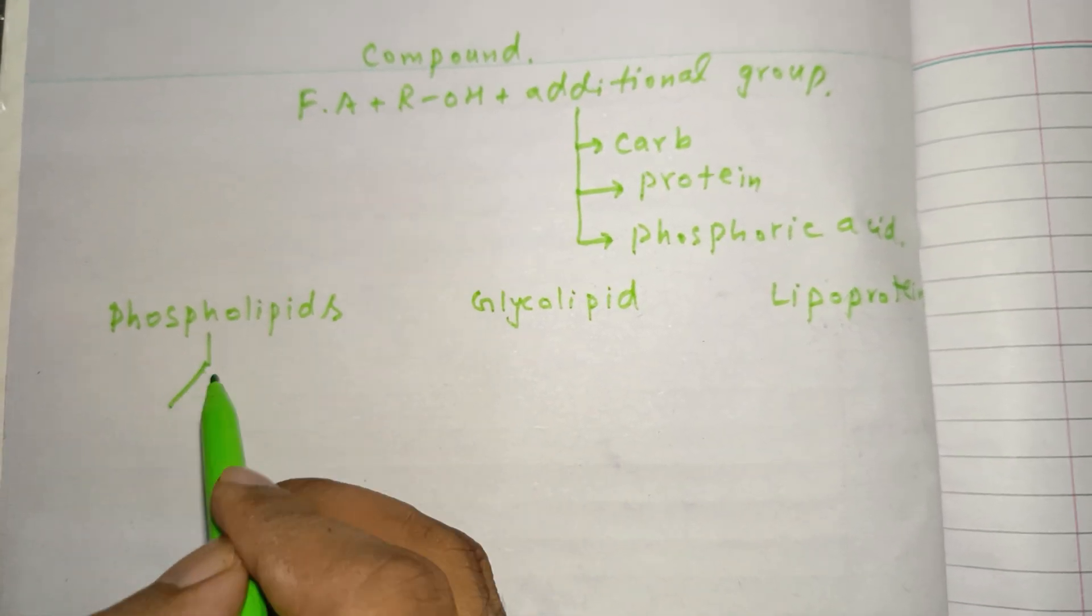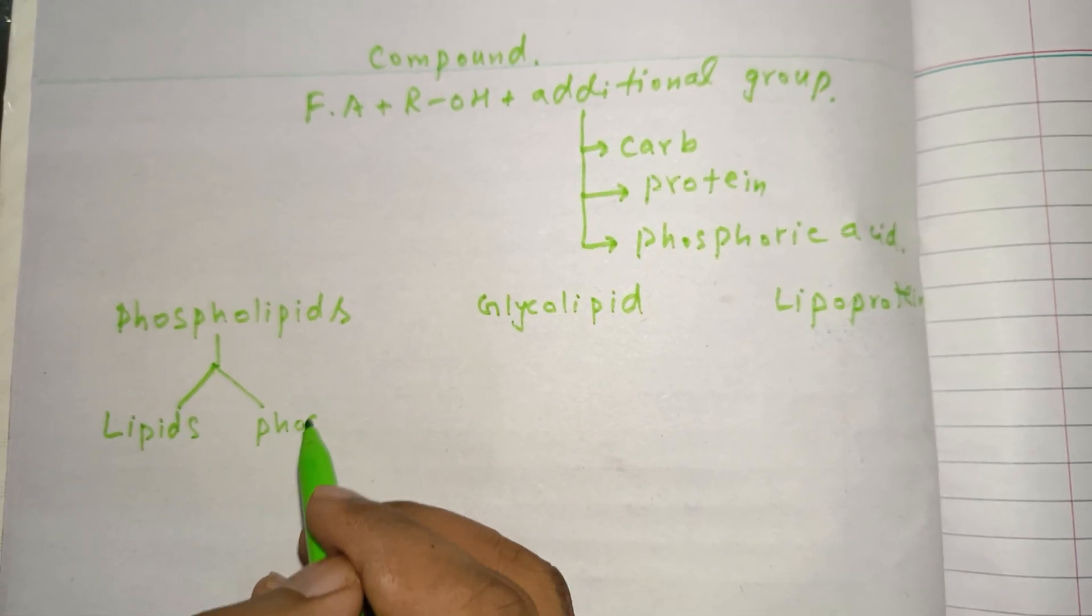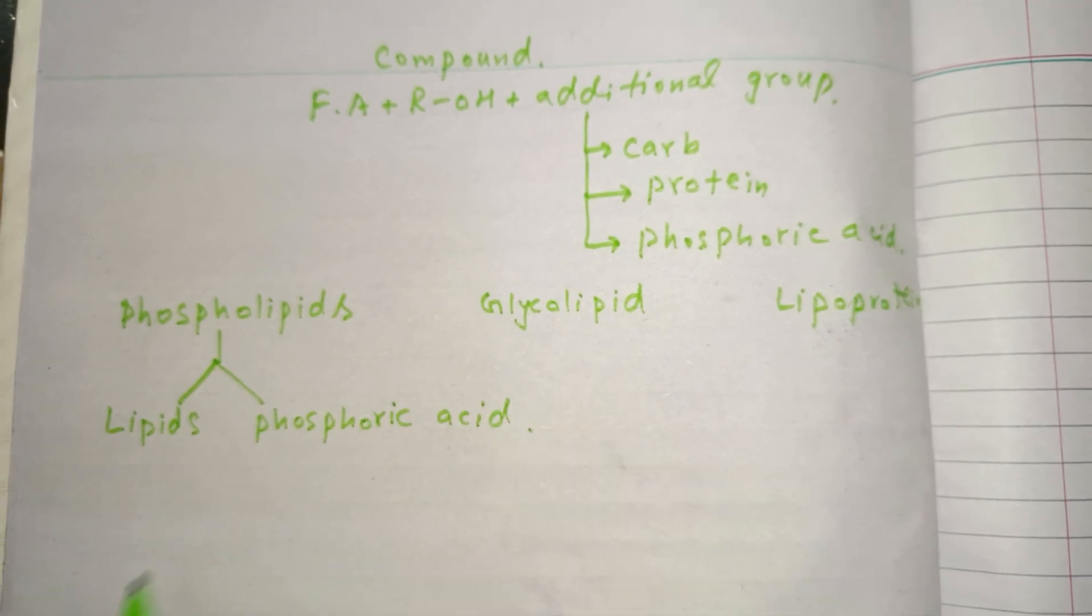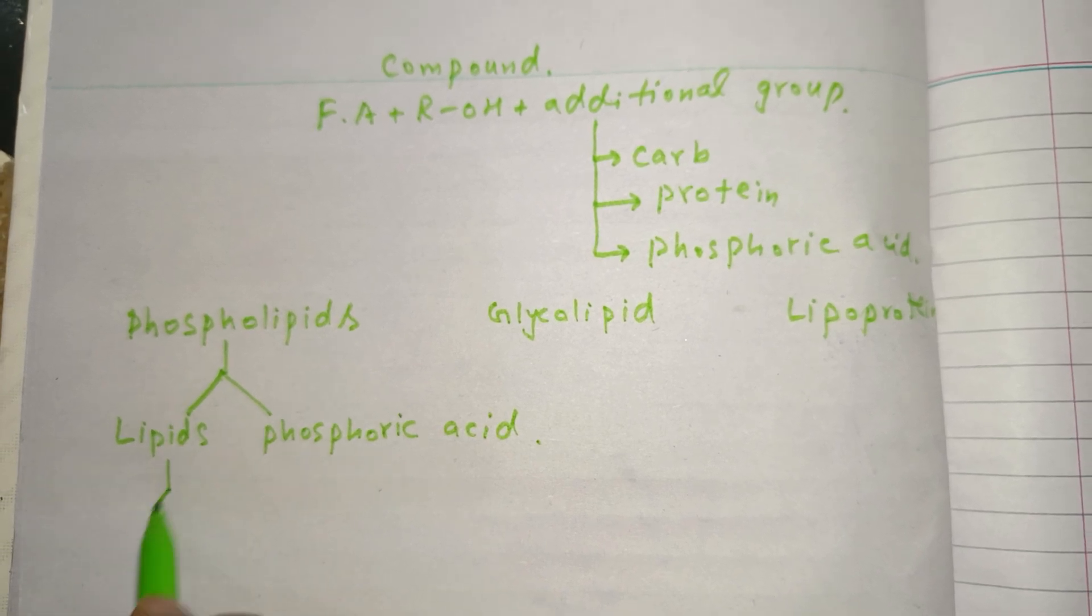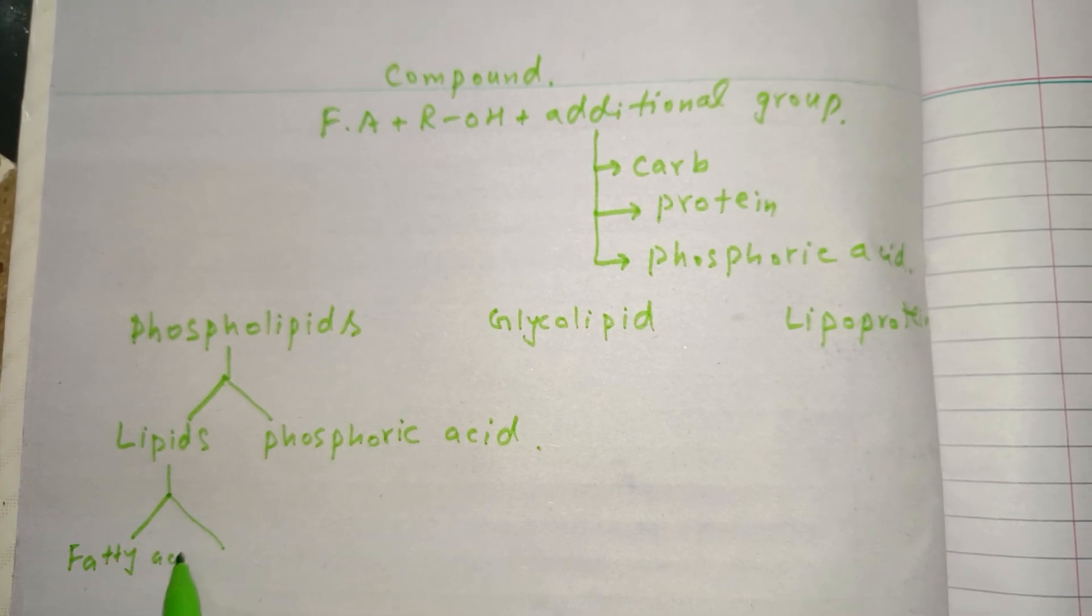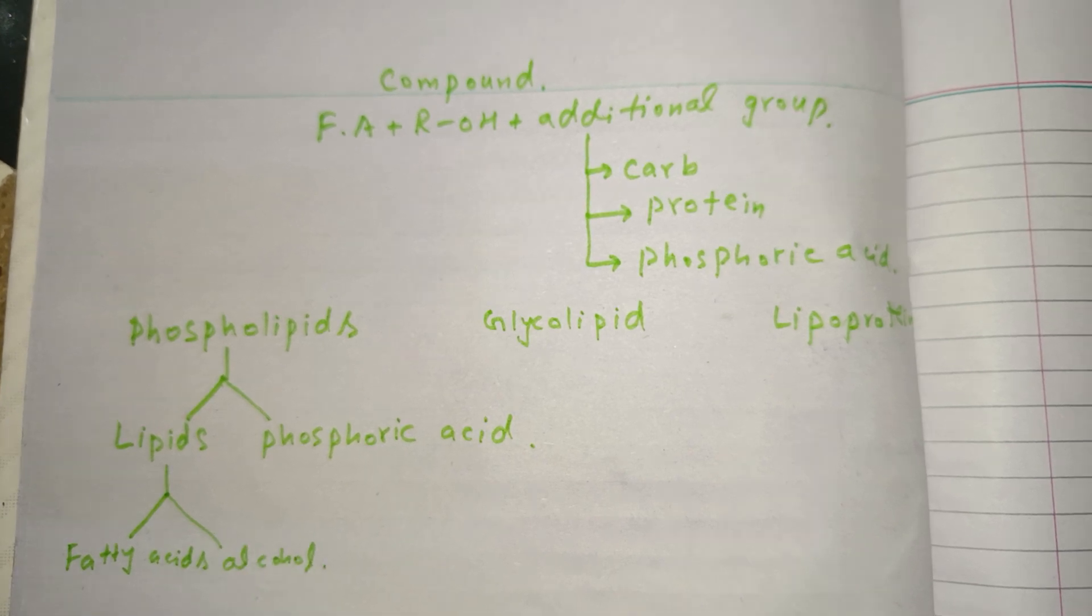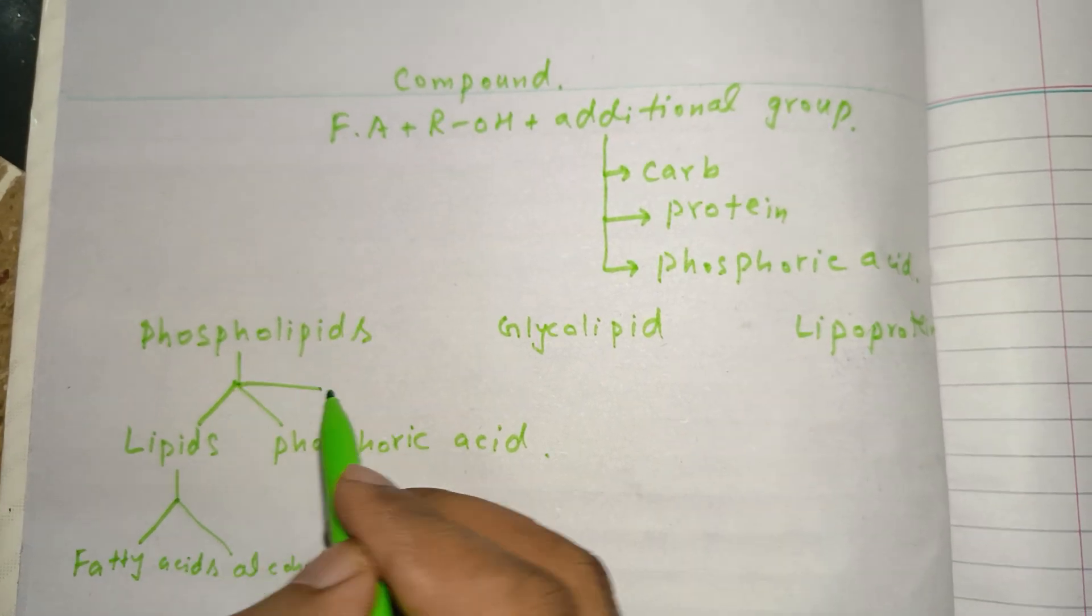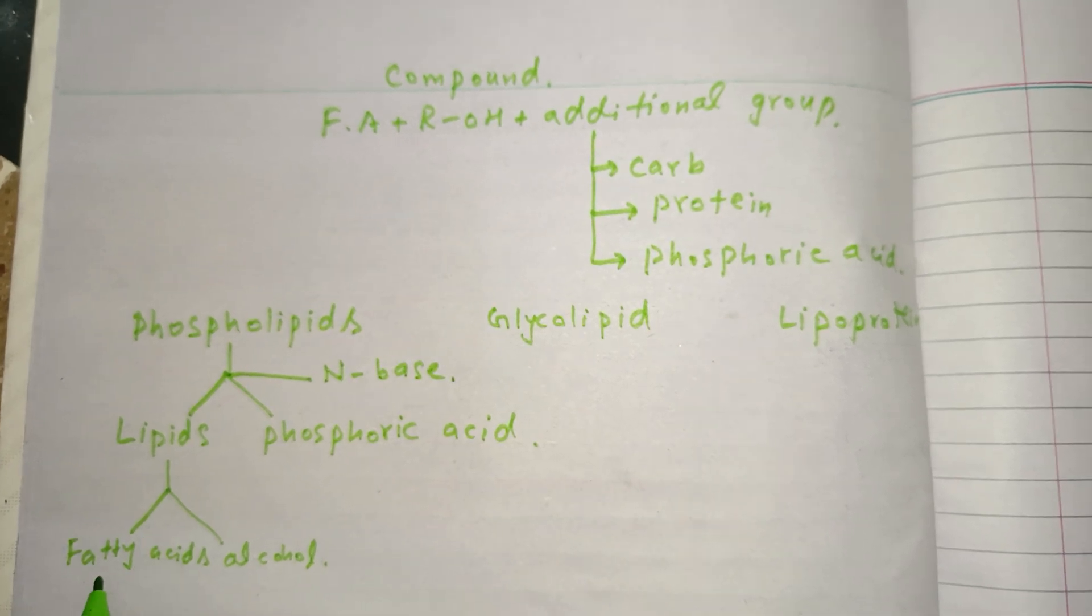Phospholipid, as the name indicates, consists of lipids and phosphoric acid. The components of phospholipids are fatty acids plus alcohol. Phospholipids, in addition to lipids and phosphoric acid, also contain nitrogen base.